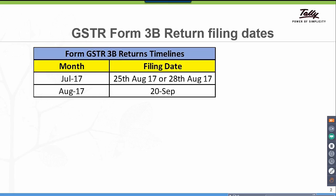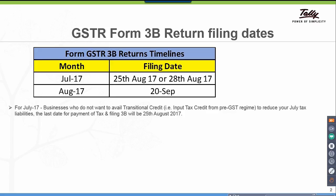Let us look at the GSTR Form 3B returns filing dates. For the month of July, the filing date is due on 25th August or 28th August, and for August month, the due date is 20th September. For July month, businesses who do not want to avail transitional credit — that is, input tax credit from the pre-GST regime to reduce your tax liability of July — the last date for payment of tax and filing 3B will be 25th August.